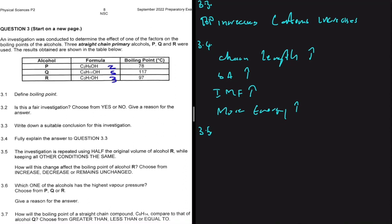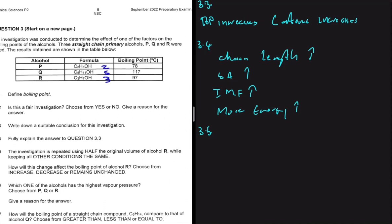3.5 is saying that the investigation is repeated using half the original volume of alcohol R while keeping all other conditions the same. How will this change affect the boiling point of alcohol R? Choose from increase, decrease, or remain unchanged. If you change the volume, you're not changing the intermolecular forces of a substance. So the boiling point will remain the same. The answer will be remains unchanged, because changing the volume doesn't change the intermolecular forces. Whether you have 2 liters of water or 100 million liters of water, the boiling point is 100 degrees Celsius.